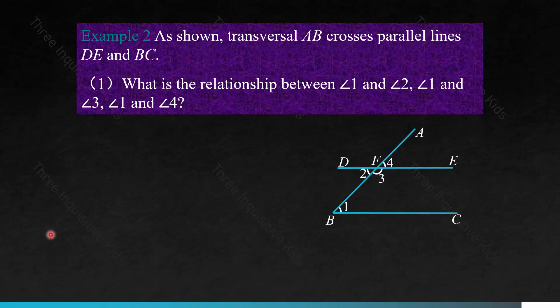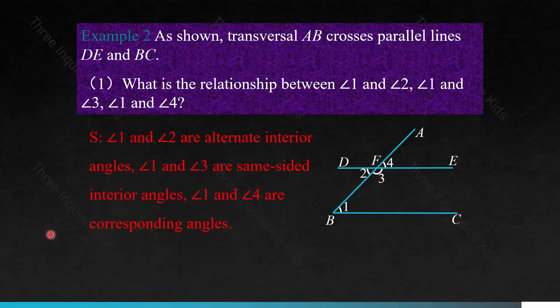Here's another problem. As shown, transversal AB crosses parallel lines DE and BC. What is the relationship between angles 1 and 2, angles 1 and 3, and angles 1 and 4? Pause the video and answer on your own first. Angles 1 and 2 are alternate interior angles. Angles 1 and 3 are same-side interior angles. And angles 1 and 4 are corresponding angles.